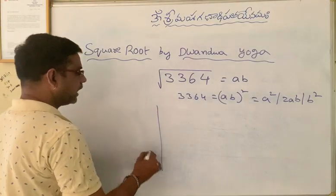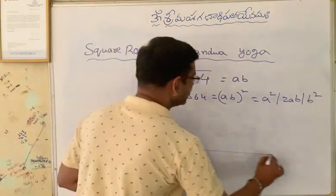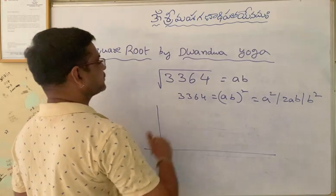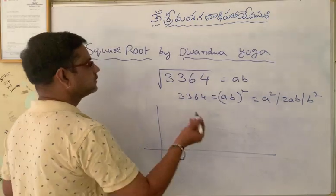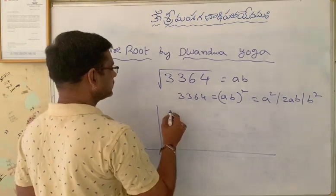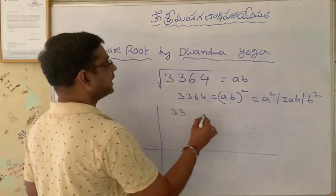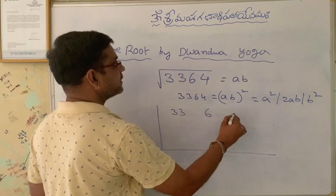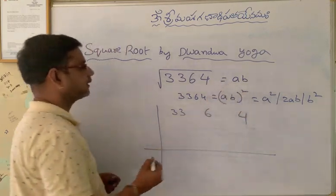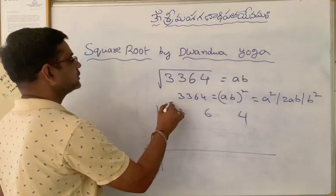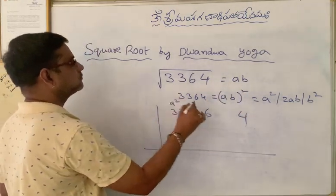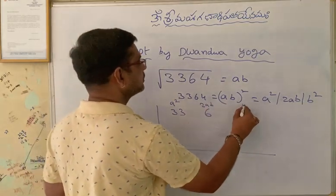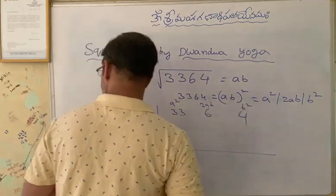Now I will draw two lines and split 3364 into three terms. The first term is A square, the second is 2AB, and the third is B square. This is the A square term, this is the 2AB term, and this is the B square term.